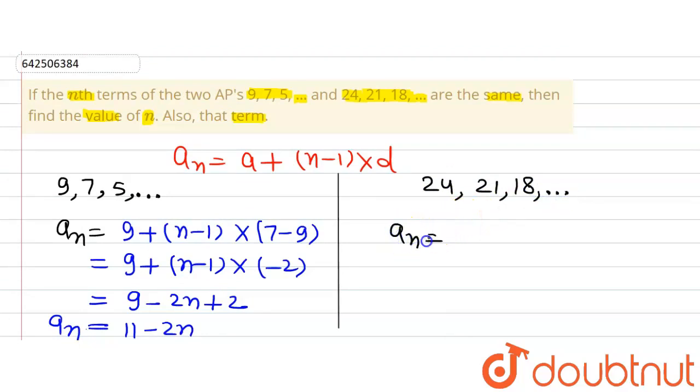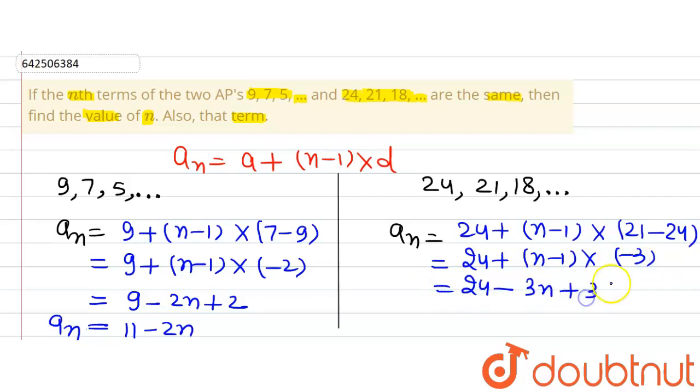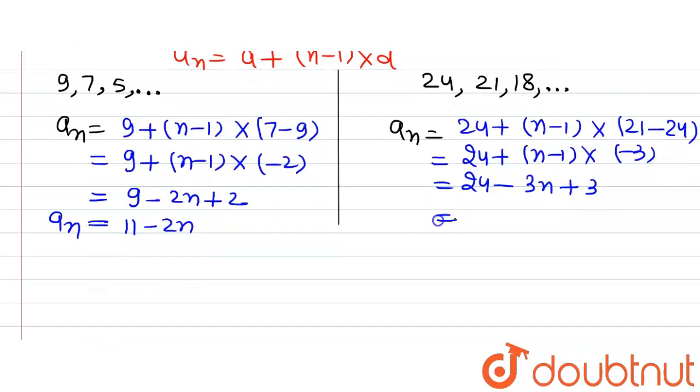The nth term of this AP—since the nth terms are the same, I'm using the same notation—will be a + (n-1) × d. Here a is 24, and d is the second term minus the first term. Solving, we get 24 + (n-1) × (-3). Simplifying further, we get 24 - 3n + 3, which gives us 27 - 3n. This is the nth term of this AP.